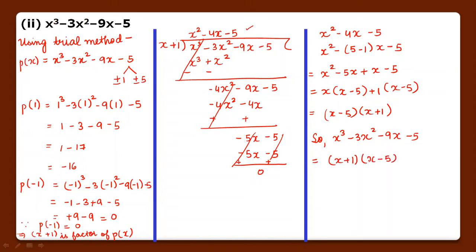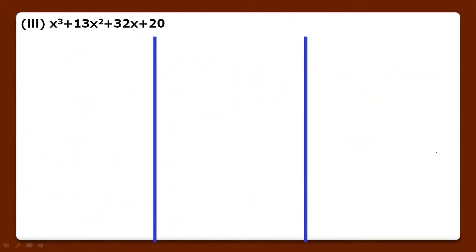The first factor we already had, so x cube minus 3x square minus 9x minus 5 equals (x plus 1)(x minus 5)(x plus 1). In this way we have got all three factors of this polynomial.